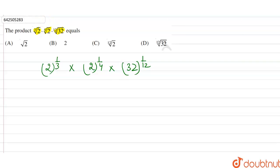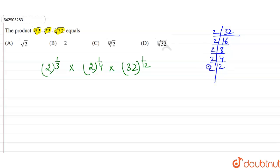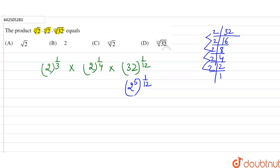First, let's make the factors of 32: 2 × 16, 2 × 8, 2 × 4, 2 × 2, and 2 × 1. So we can write 32 as 2 raised to the power 5. Therefore 32 raised to the power 1 by 12 becomes 2 raised to the power 5 into 1 by 12.